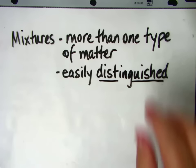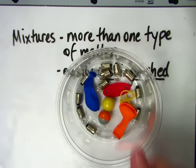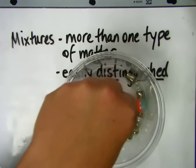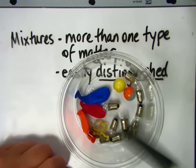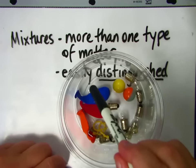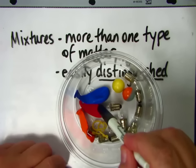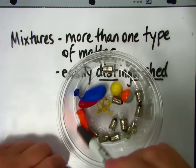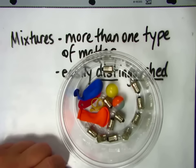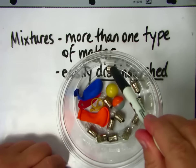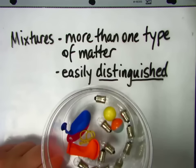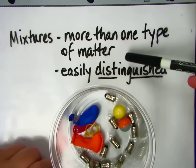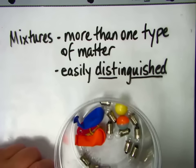My first example of a mixture is this container, which has a mixture in it because it has more than one type of matter. You can see there's one type of matter, another type, another type — we have a number of different types of matter. It is a mixture because I can easily distinguish the different types of matter. So there's more than one type of matter, and it's easily distinguished.